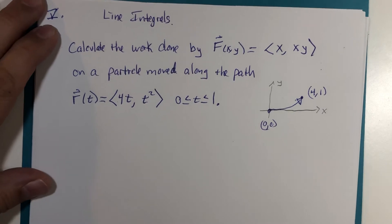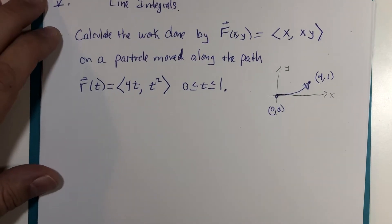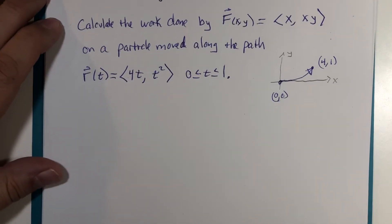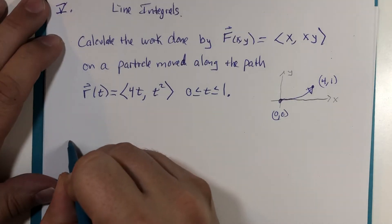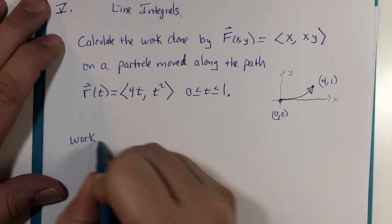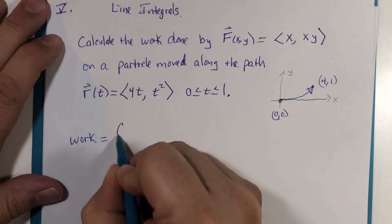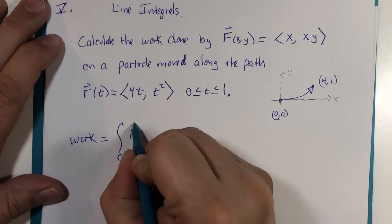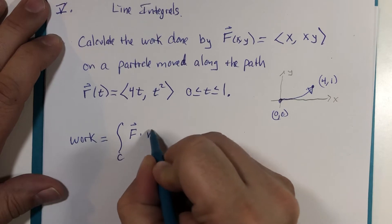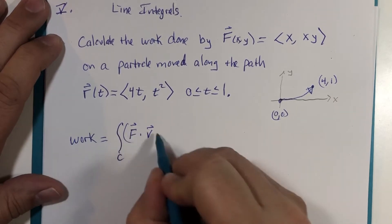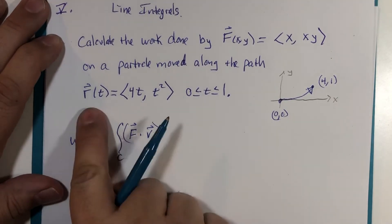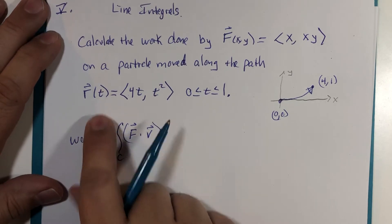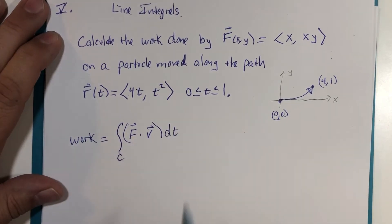So the derivation I gave you all for calculating work is a line integral: the vector field dot product the velocity vector. The velocity vector is the first derivative of our function, dt.